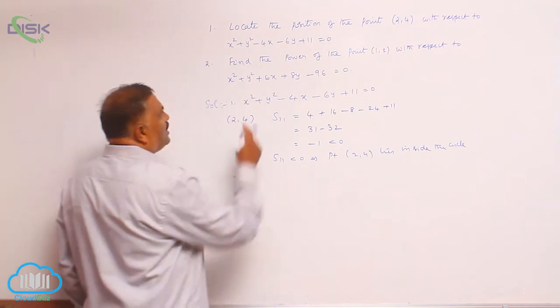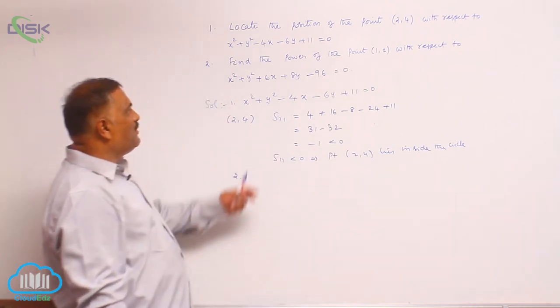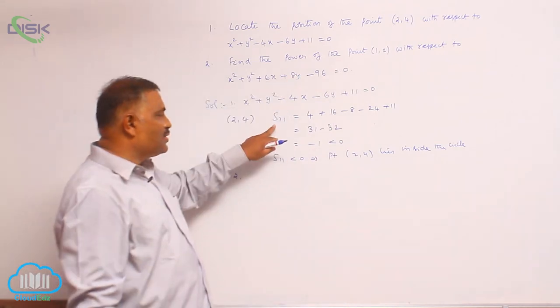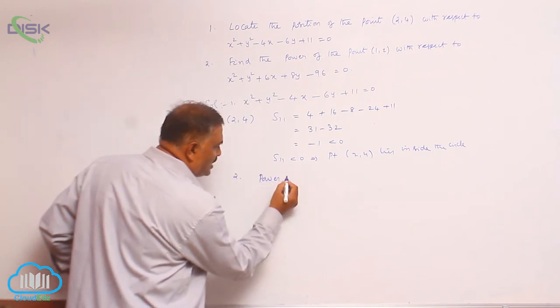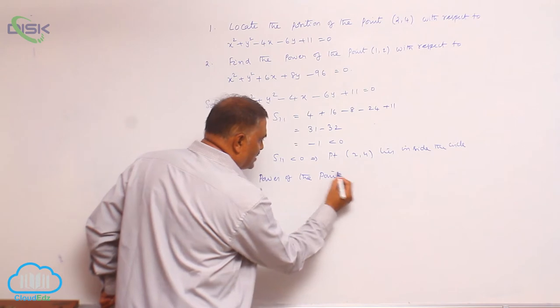Second problem: find the power of the point (1,2). You know that power of the point is denoted by S11. So, power of the point equals S11.